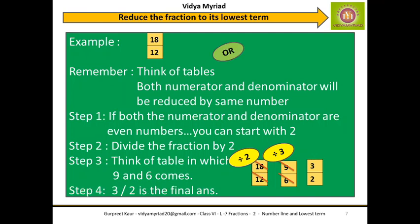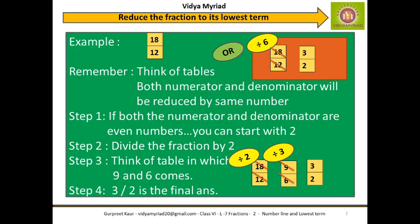There is one more way of doing it. The same fraction 18 by 12 — if you know your tables well, you should know that both 18 and 12 are divisible by 6, as both numbers appear in the 6 times table. So I will directly divide by 6. It is not necessary to start with 2. If I divide, 6 threes are 18 and 6 twos are 12 — I get the same answer 3 by 2 in both cases.